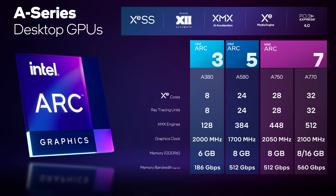Some of the interesting specs — as we look at the table on the screen — 32 Xe cores at the top end for the A770, 28 for the A750, 24 for the A580. So we've got a good range. You can think of the Xe core as the basic computation engine — more Xe cores means more graphics performance and bigger dies. Graphics clock ranges from 1700 MHz on the A580 all the way up to 2100 MHz on the A770, which is something that's managed to confuse a lot of the community.